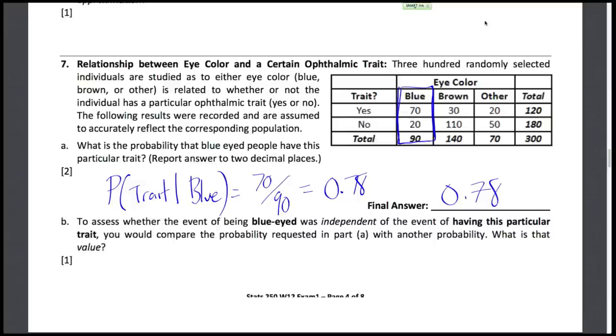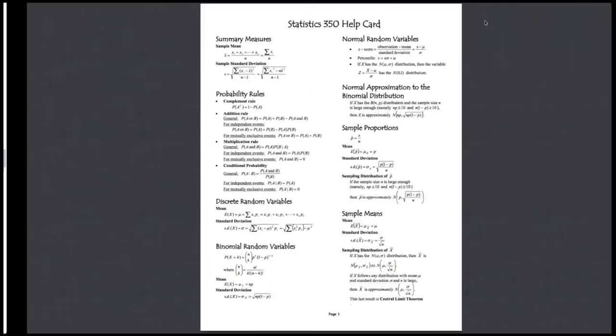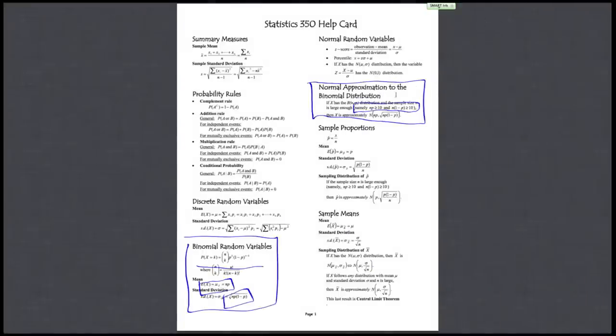Alright. And then last question here. To assess whether the event of being blue eyed was independent of the event of having this particular trait, you would compare the probability requested in part A with another probability. And that value, if we check our formula card, we want to compare a conditional probability as that's what we just found. For independent events, we compare the conditional probability, what we just found, to just the probability of the first part.